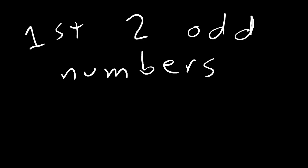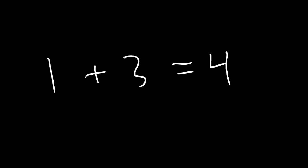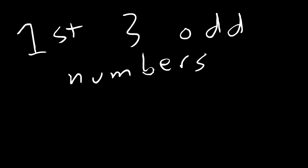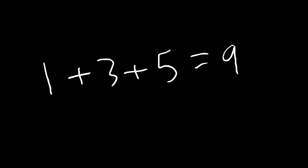The first two odd numbers are one and three, which sum to four, which is two squared. The first three odd numbers are one, three, and five, which sum to nine, which is three squared, and so on.